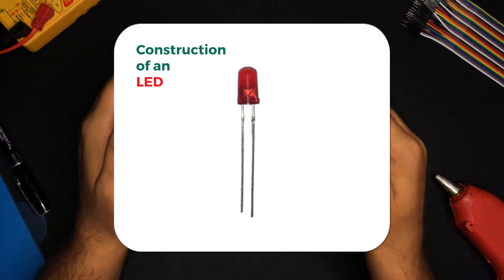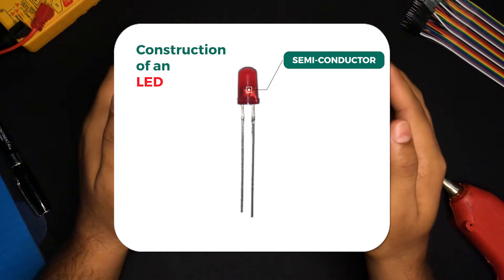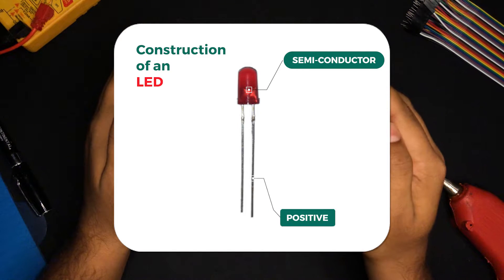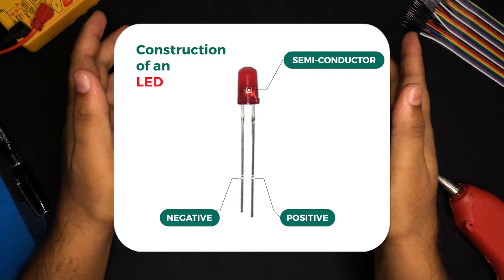The longer one is the positive terminal, and the shorter one is the negative terminal. LEDs come in different sizes and also in different colors.